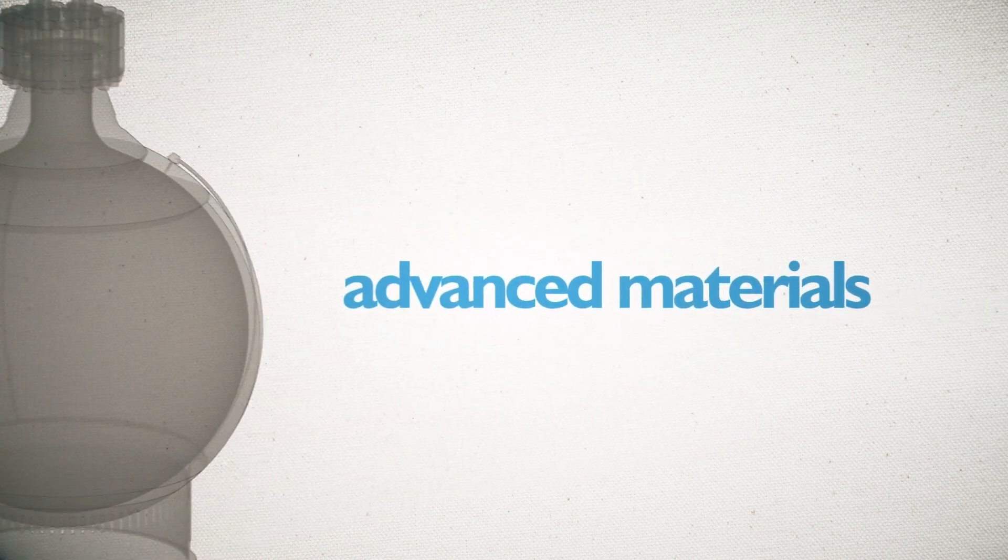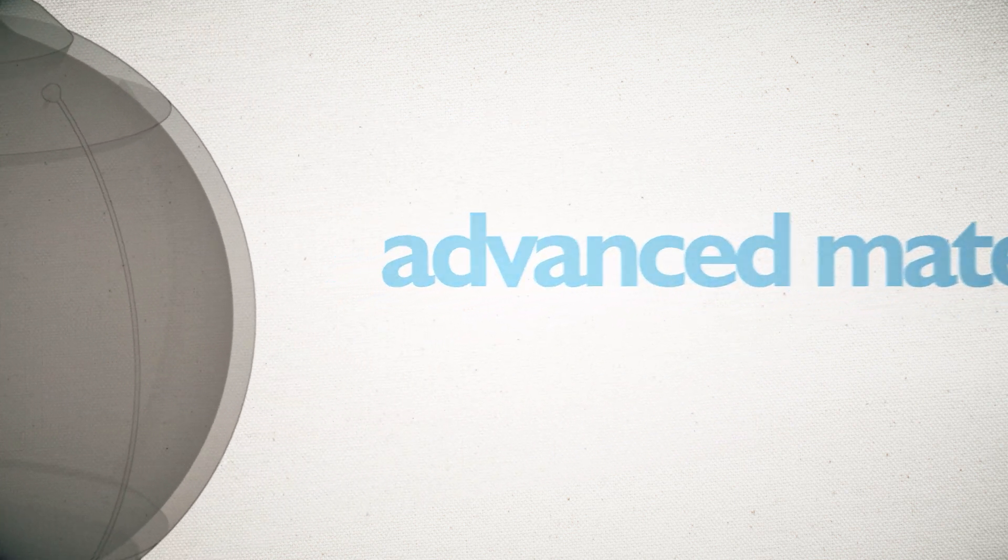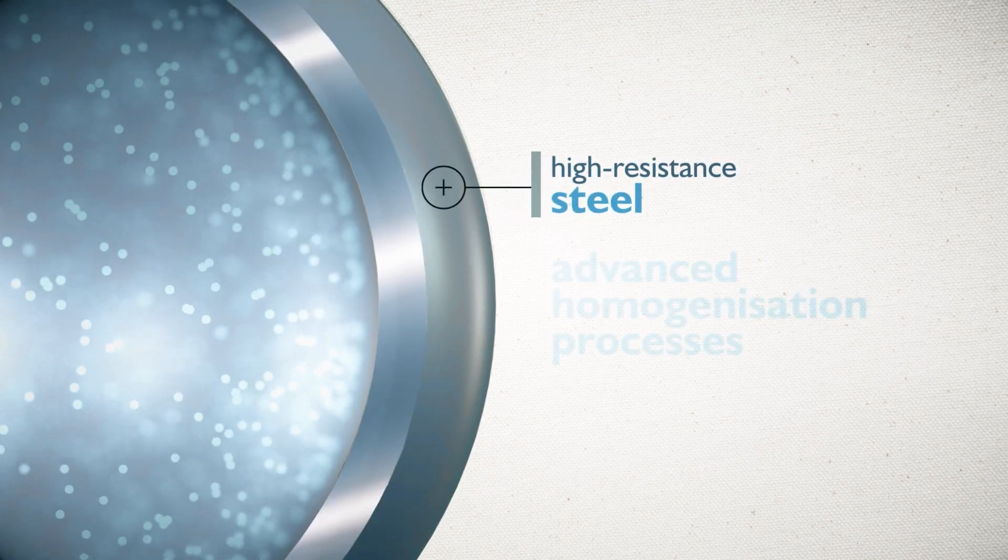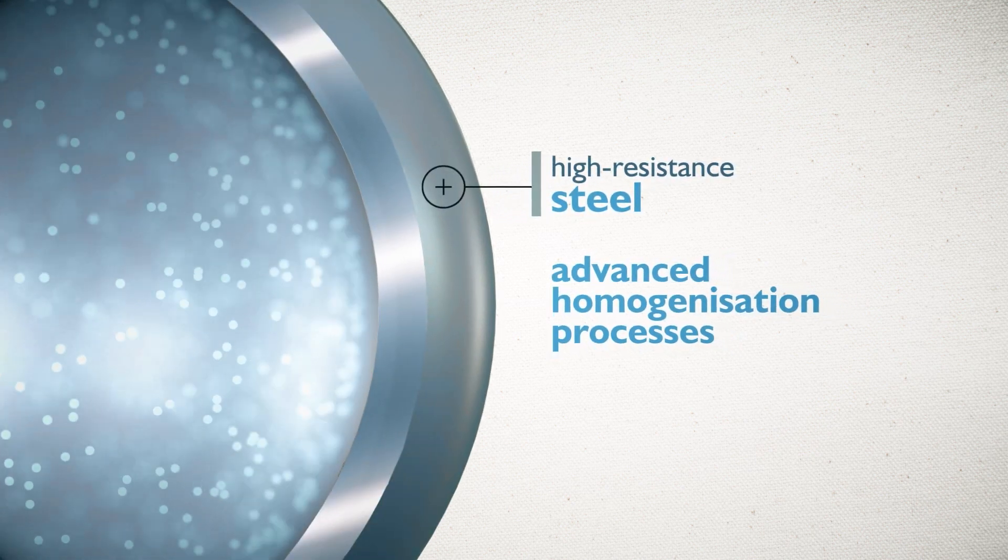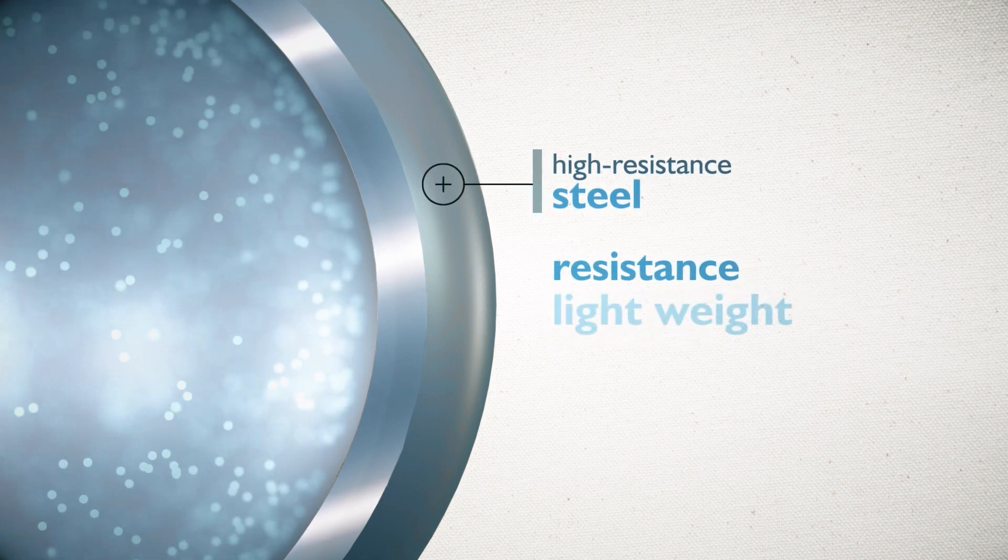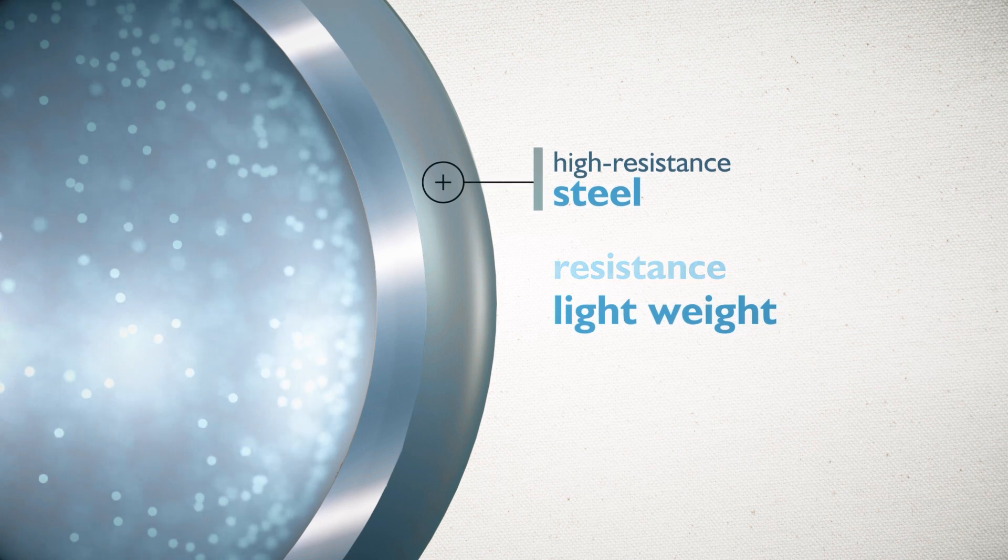Sphero is composed of an outer shell in high resistance steel, further modified by Walter Tosto through advanced homogenization processes, which guarantee greater resistance in combination with light weight due to the lower thickness of the outer shell.